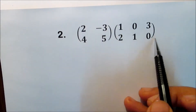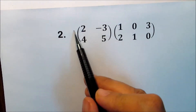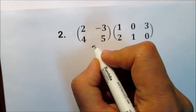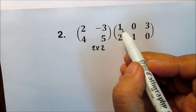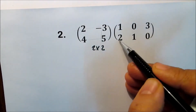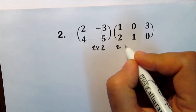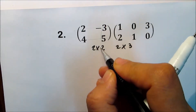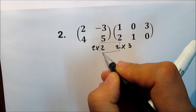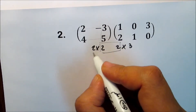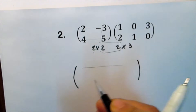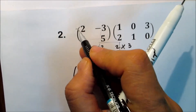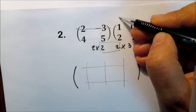Another example: multiply the two matrices. The first has two rows and two columns, so it's a 2 by 2 matrix. The second has two rows and three columns, so it's a 2 by 3 matrix. Check to make sure the two inside numbers are the same. The order of the new matrix is 2 by 3, so we expect two rows and three columns.